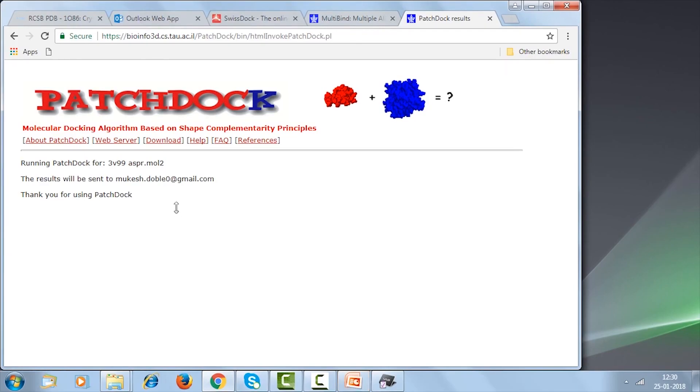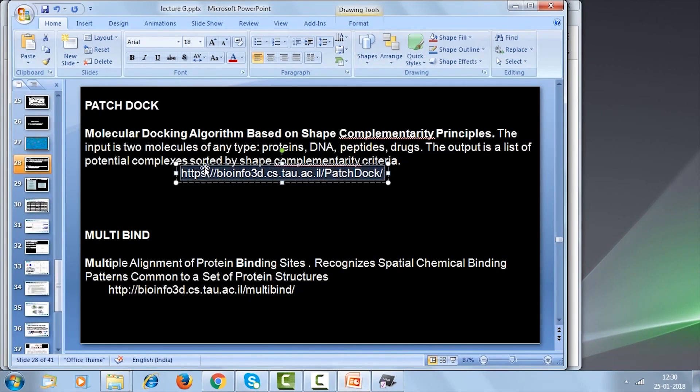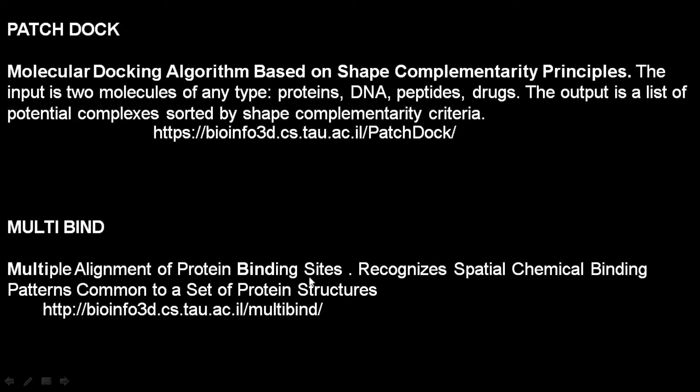In summary, MultiBind looks at several protein binding sites and identifies similarity of chemical principles like hydrophobic, hydrophilic, polar, and non-polar features. PatchDock looks at a ligand and target protein and sees commonality based on their shape. Both are web-server based — you upload your problem and results come to your email, all free of charge. We will continue more on the topic of computer-aided drug design in the next class.